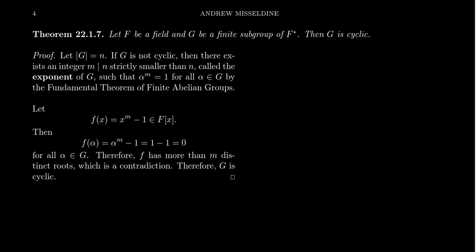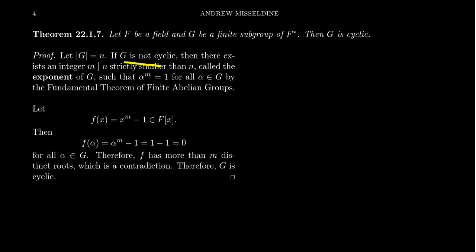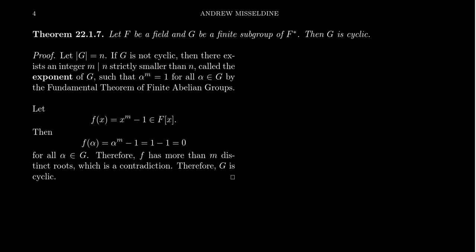We're going to prove a slightly more general argument — F could be an infinite field — but any finite subgroup of the group of units has to be cyclic. Since G is finite, it has some finite cardinality n. Since F is a field, F* is an abelian group because multiplication is commutative, so G is a finite abelian group. Therefore, the fundamental theorem of finite abelian groups applies, and we can factor G into a product of cyclic groups. If G is itself not cyclic, that means it has a non-trivial exponent.